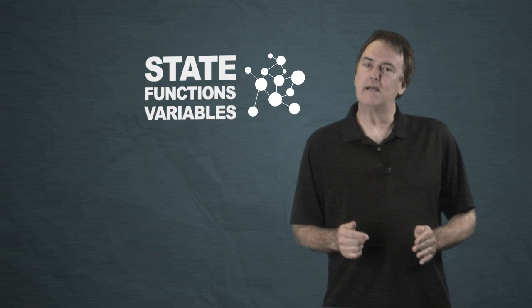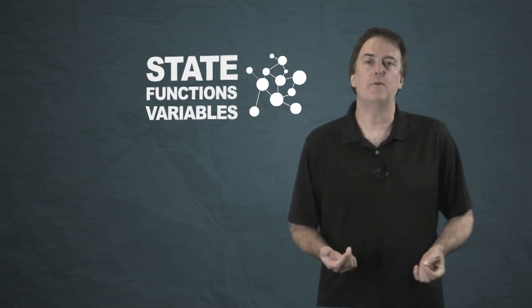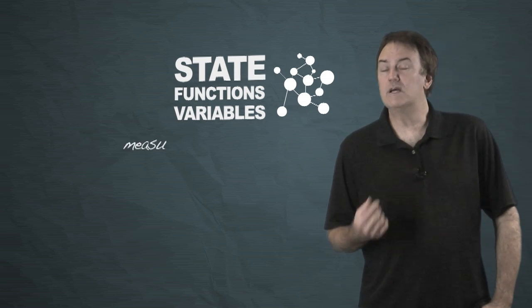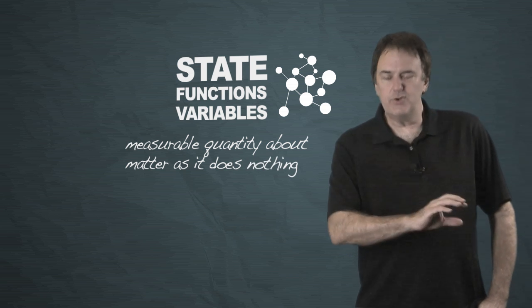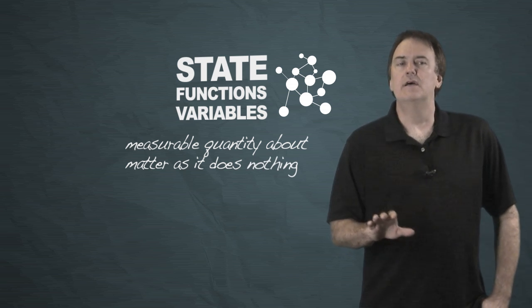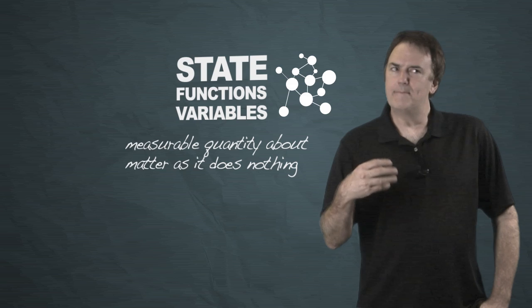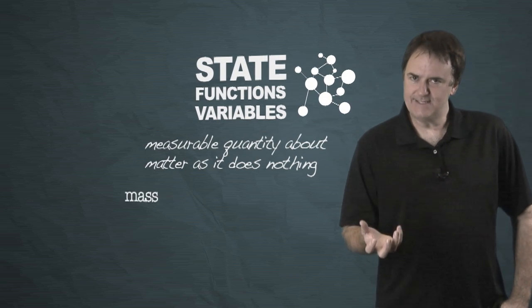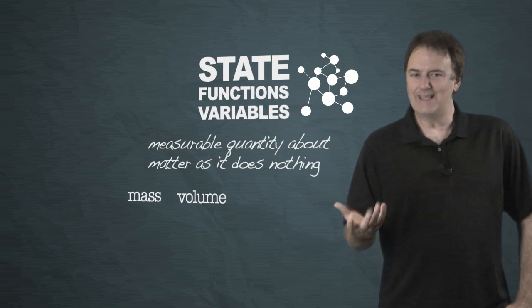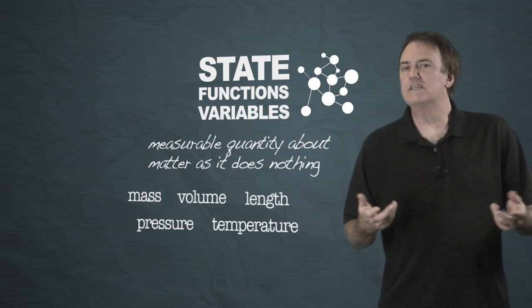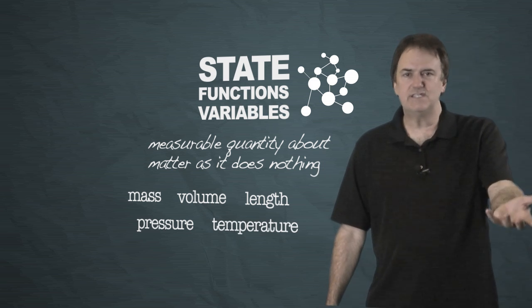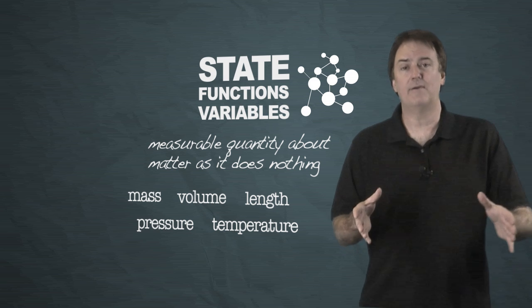And what we mean by a state function or a state variable is it happens to be a measurable quantity about matter as it's just sitting there doing absolutely nothing. So it tends to be measurements like mass, volume, length, pressure, temperature. All of these things can be measured as matter just sits there and does absolutely nothing but just sit there.